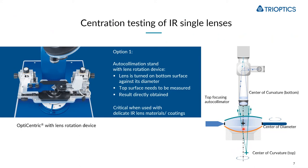This approach is a bit critical when it comes to very delicate IR lens materials, especially when these materials come with a sensitive coating. In that case, you may want to avoid rotating the lens on a ring chuck or evacuated cup, and rather use a different approach.